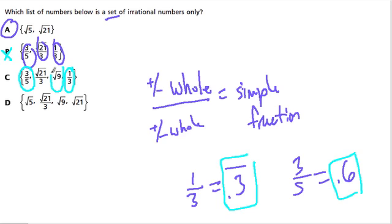Here, again, square root of 9 is 3, because 3 times 3 is 9. So here the only irrational number is the square root of 21 over 3.